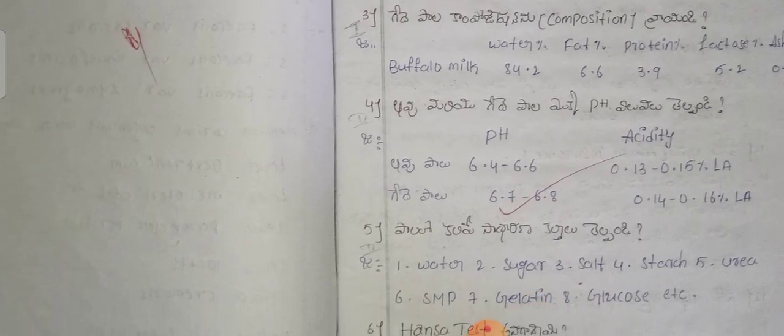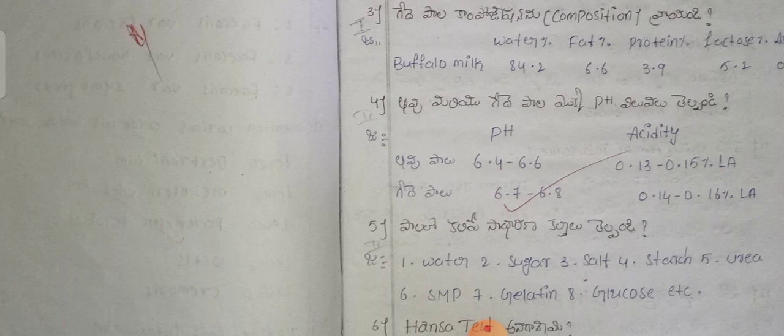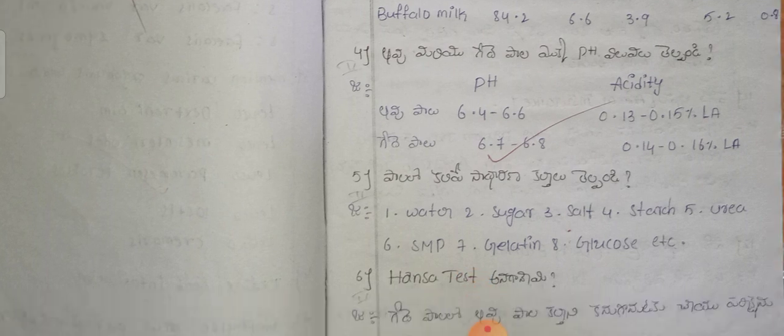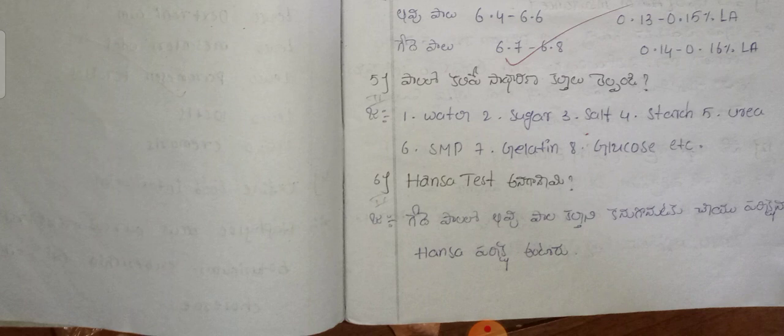Buffalo milk acidity values are 0.142 to 0.16. Common adulterants found in milk include: water, sugar, salt, starch, urea, skimmed milk powder (SMP), gelatin, and glucose.